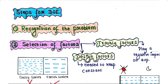Now let's talk about the steps for designing an experiment, or DOE. There are a few steps. The first step is recognition of the problem, which must happen even before designing the experiment. The second step is selection of factors.